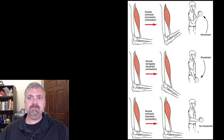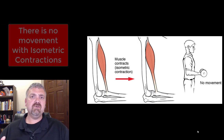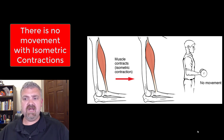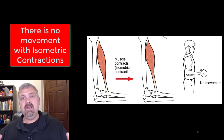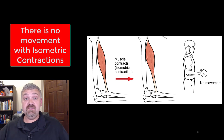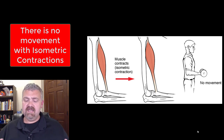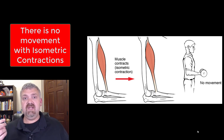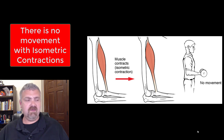Let's jump in and first talk about isometric contractions. These are going to be contractions where there's no movement. When you think of contractions, you probably do think of movements, but imagine how many muscles have to contract — just me sitting here, or you standing up. It would take a couple of hundred muscles easily for you to stand still. So think about all your postural muscles. That's what I think of with isometric contractions.